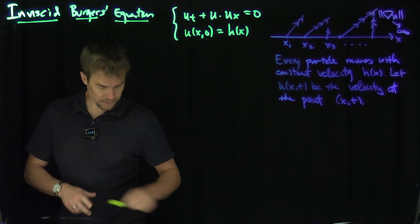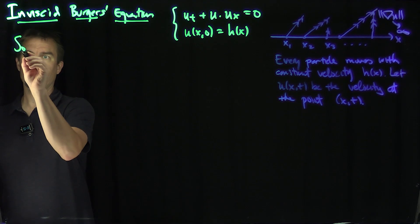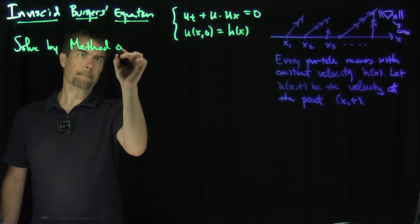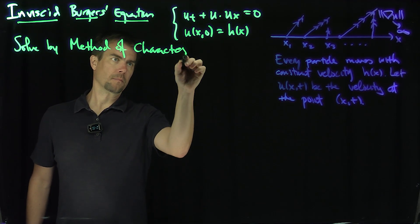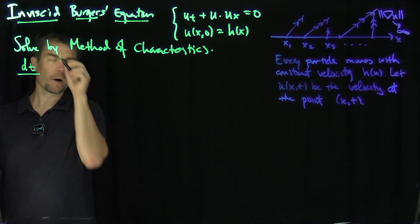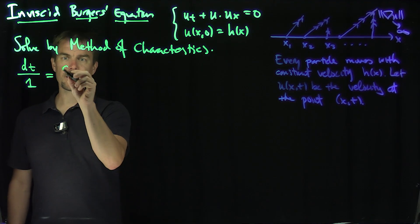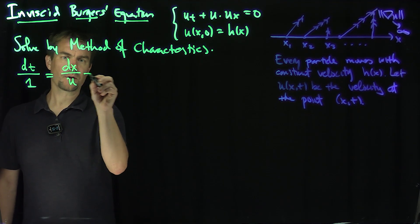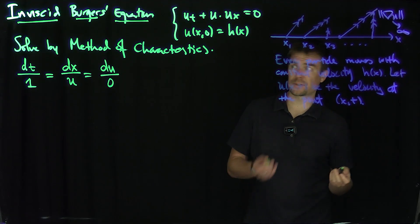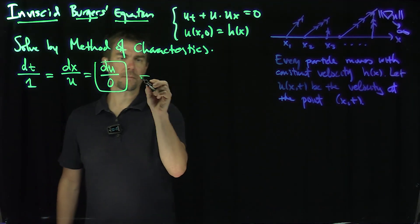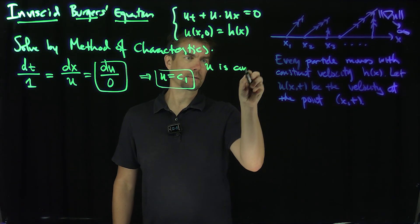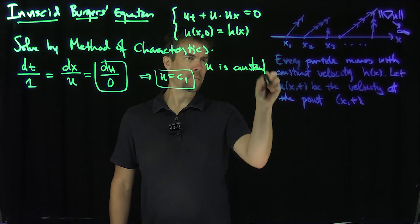So let's solve it by the method of characteristics. What we have is dt over 1 equals dx over u equals du over 0. We know that the function is going to be constant along characteristics. So this equation tells us that u equals c1 — i.e., u is constant along characteristics.